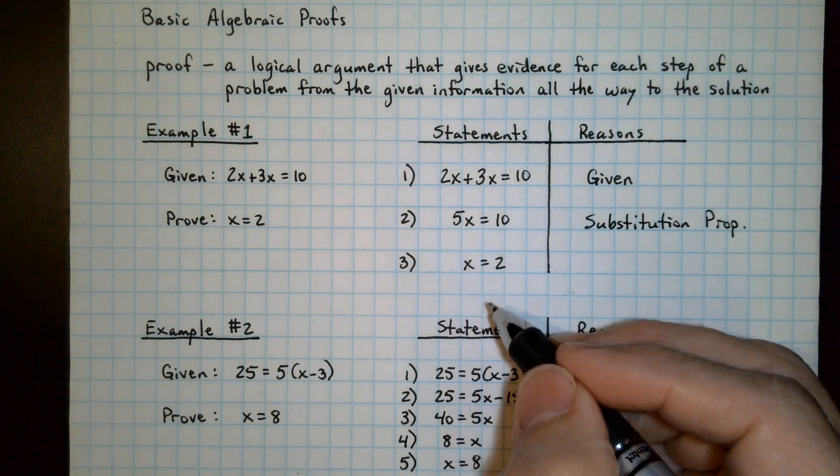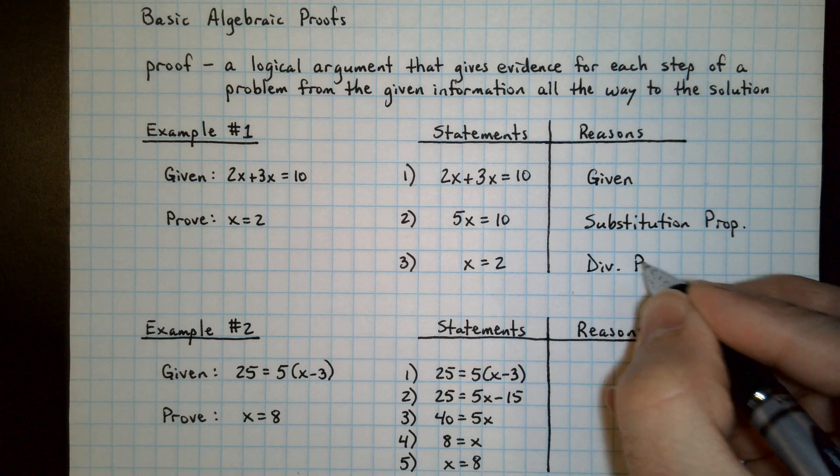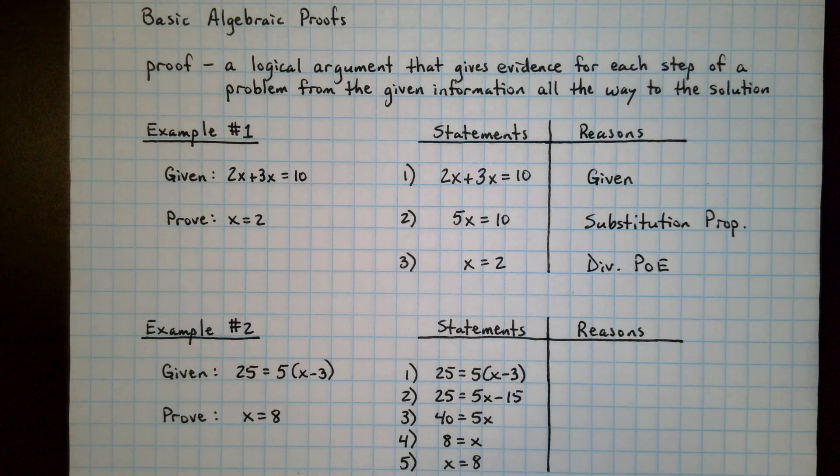And then we would be dividing by 5 on each side, and that is the division property of equality. And I just abbreviate it that way most of the time.